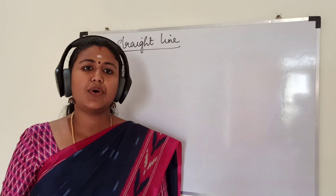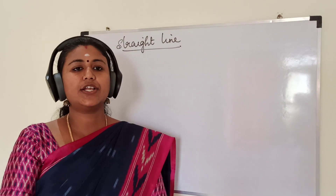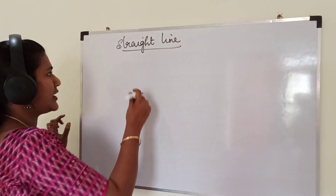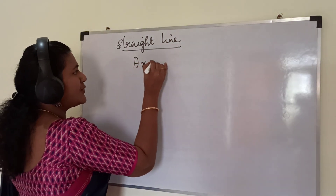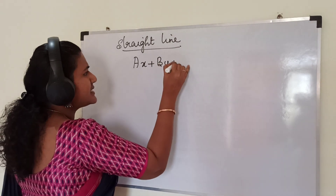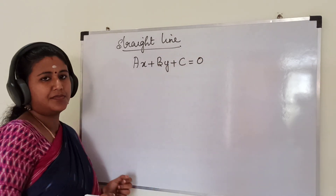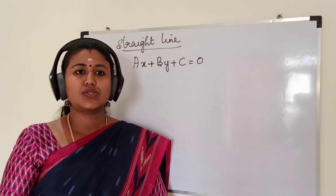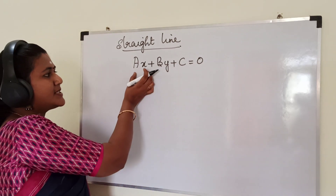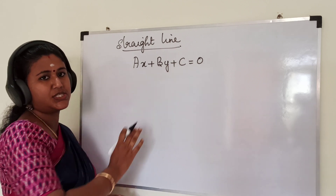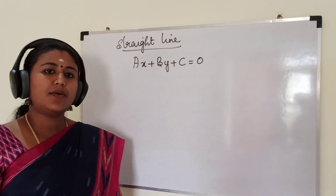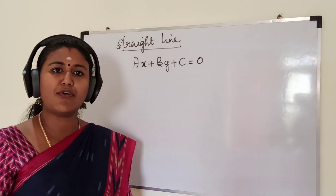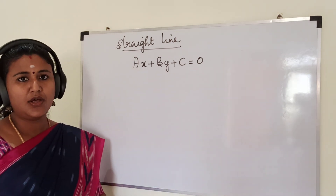So in earlier classes, you have already studied a linear equation in two variables. The standard form of a linear equation in two variables is AX plus BY plus C is equal to 0. The graph of such an equation is a straight line. Any equation of the form AX plus BY plus C equal to 0, where A and B are not 0 simultaneously, is called the general form of a straight line.